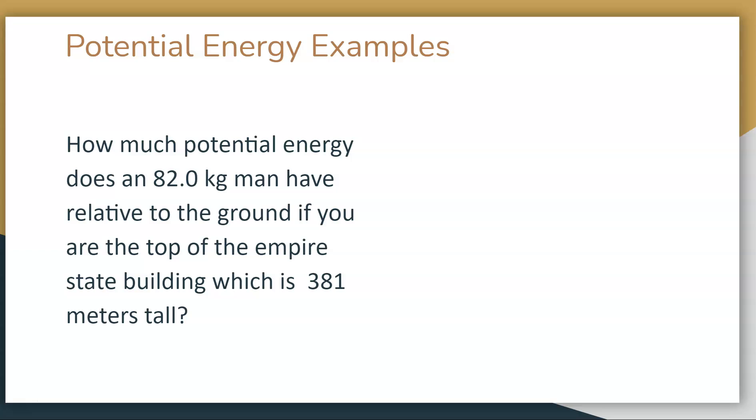Let's start with a couple examples. How much potential energy does an 82.0 kilogram man have relative to the ground if you are at the top of the Empire State Building, which is 381 meters tall? We're going to calculate the potential energy using our formula m times g times h. We have m, 82 kilograms. We have g, 9.81 meters per second squared. And we have height, 381 meters.